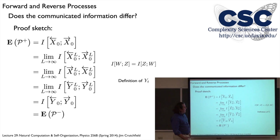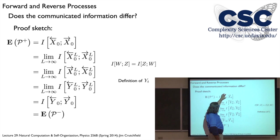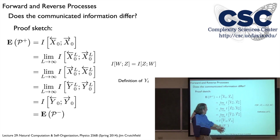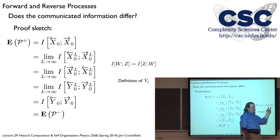Entropy rate and excess entropy are symmetric under change of scan direction. If there's some statistical temporal asymmetry, you couldn't use them to detect it. So now does the stored information differ? To answer this — the information we need to store from the past to do optimal prediction at rate h-mu — we need to talk about the epsilon machine of the reverse process.